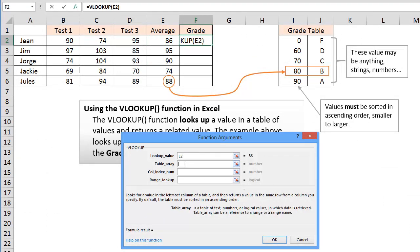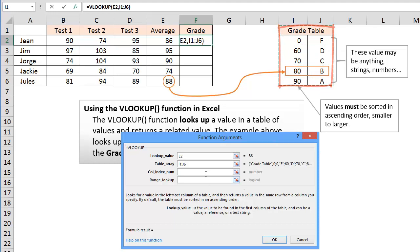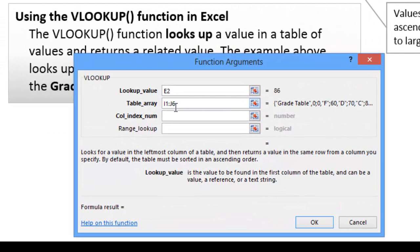The next value they want here is the table array. Basically they say that is the table of text and numbers in which the data is going to be found. So we essentially want to search for that average score in our grade table here. So I am just going to select the entire grade table. And it puts it in there. Notice I did select the title of the table too. That is okay to do that.